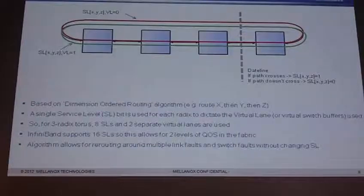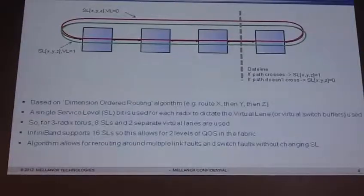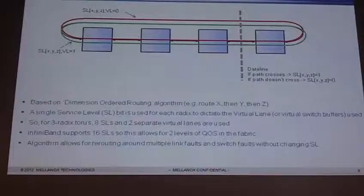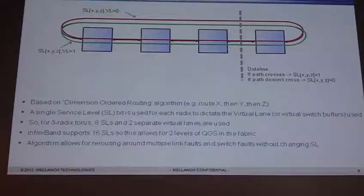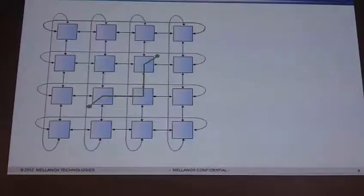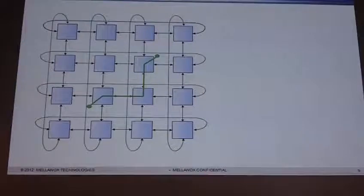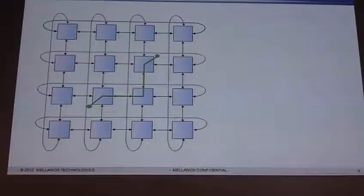The algorithm also allows for rerouting around multiple link faults and switch faults without changing the SL. That's very important because it's the application that picks the SL. When going from one node to another, I need to find out what SL to use, and once my application like MPI starts using that SL, I don't want to change it. If a link gets pulled, I want to keep the same SL — I don't want the application to die and MPI to have to restart. So let's look at a link failure example. There's something in InfiniBand called a subnet administrator that has all the information on all the connections within the fabric.